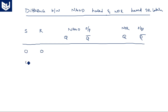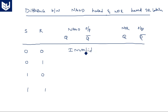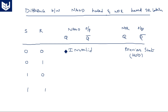For the NAND outputs: when both inputs are 0, the state is invalid. For the NOR outputs: when both inputs are 0, Q=0 and Q bar=1. In the NAND operation with input 0,1 — since R=1, a reset operation would normally be expected, but because NAND is the opposite logic, a set operation is performed instead. So Q=1 and Q bar=0 for the NAND case, while for the NOR gate it is Q=0 and Q bar=1 since reset is performed.